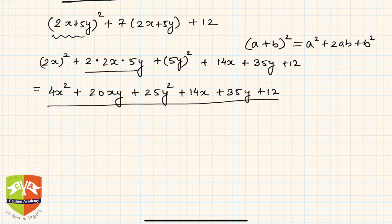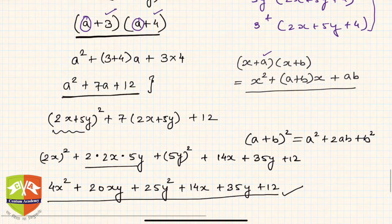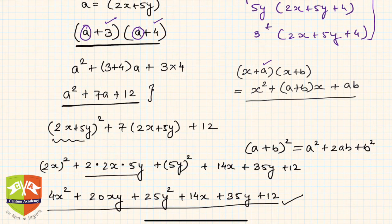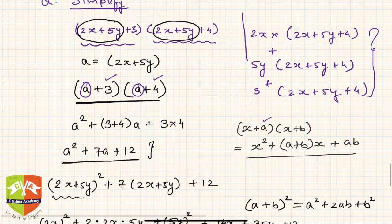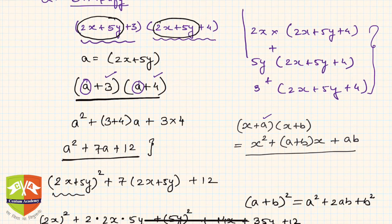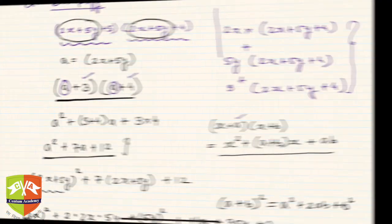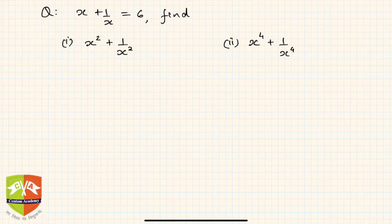There are no like terms so we cannot simplify further. Hence the final answer is 4x² + 20xy + 25y² + 14x + 35y + 12. This is how you use algebraic identities to simplify a given expression.